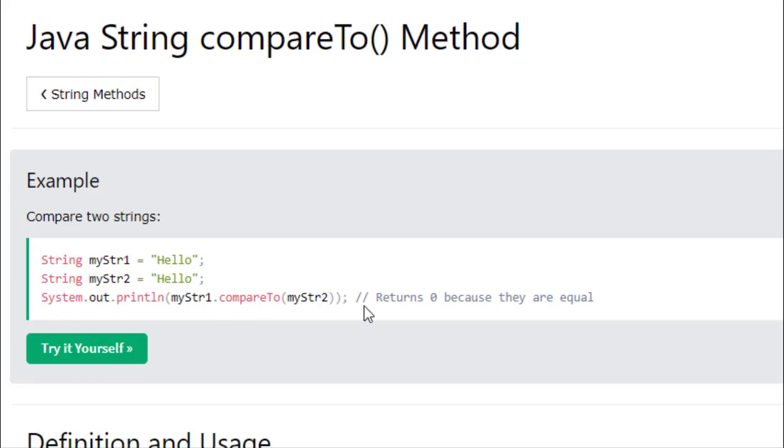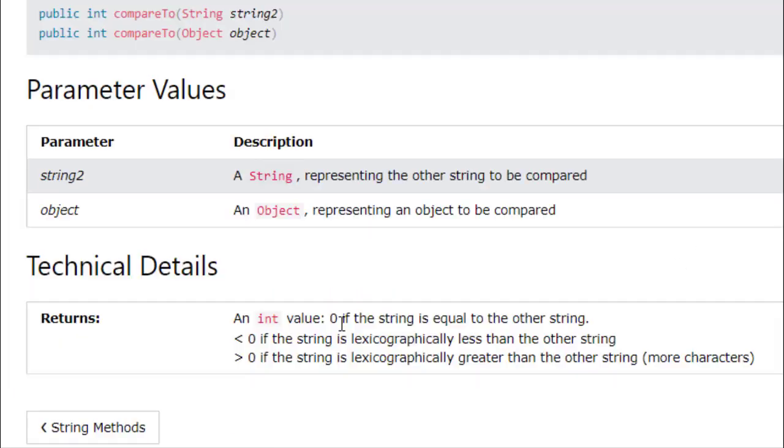The argument is the second string. Notice that instead of returning true or false, compareTo is going to return an integer. If the two values compare to be the same, lexicographically using ASCII or Unicode, then they're going to return a zero. If it returns a zero, we know those two strings are equal to each other. If the value returned is less than zero, then the object calling the compareTo method is considered to be less than, lexicographically or in alphabetical order, than the other string.